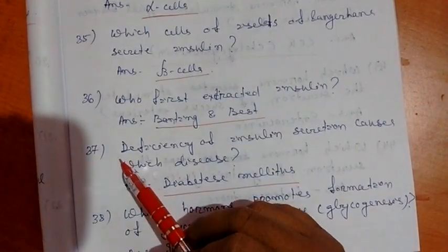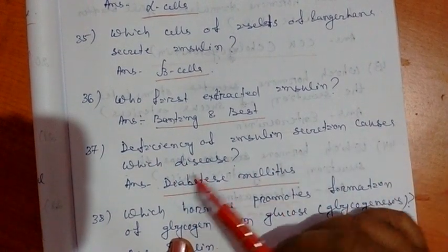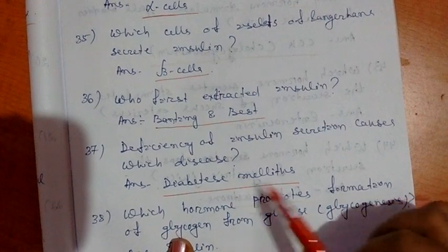Question number 37. Deficiency of insulin secretion causes which disease? That is diabetes mellitus.